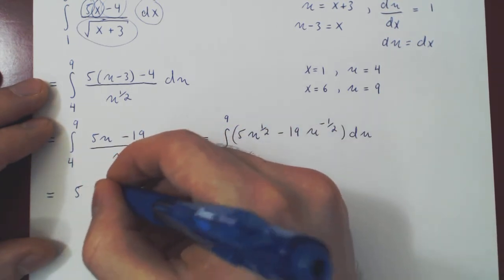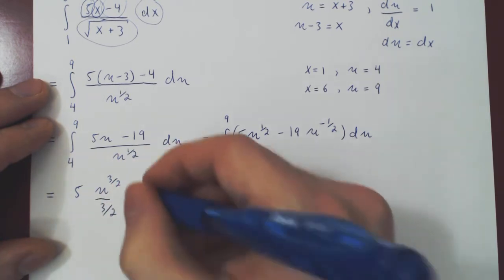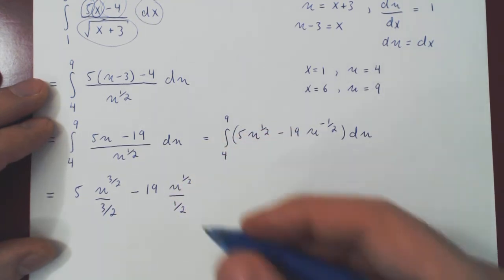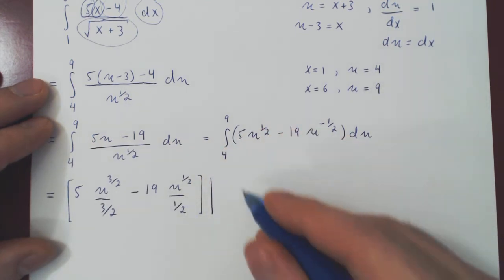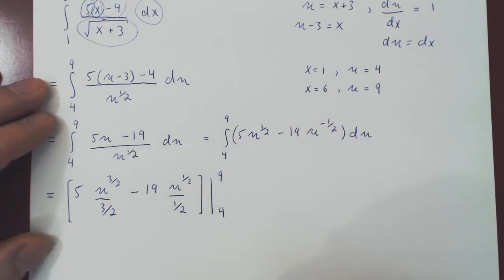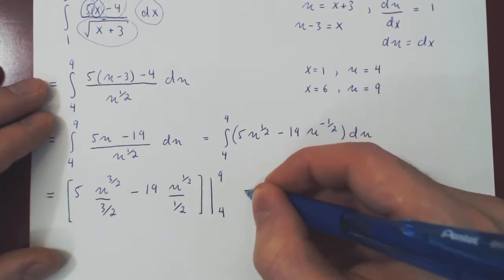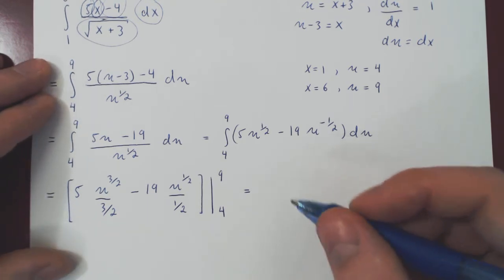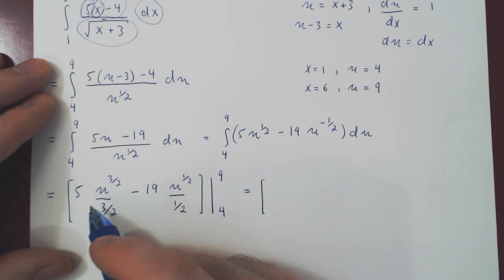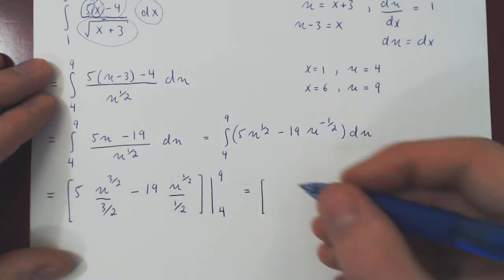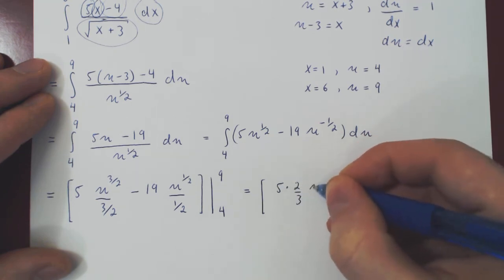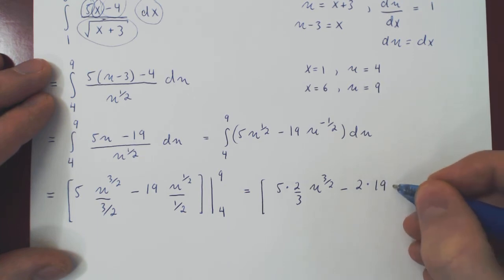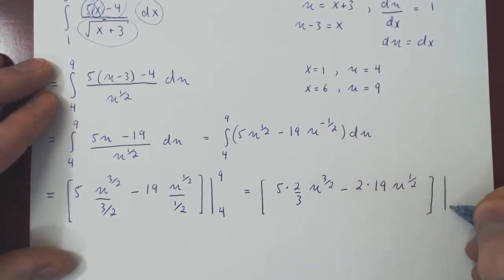u over u to the 1 half is u to the 1 half, minus 19, 1 over u to the 1 half is u to the negative 1 half, and now we can simply use the power rule on each term. 5, 1 half plus 1 is 3 half, divide by 3 half, minus 19, constant multiple, negative 1 half plus 1 is 1 half, over 1 half. And we must evaluate our anti-derivative from u equals 4 to u equals 9. Well, let's simplify this a little bit. And here, because we have square roots, and both 9 and 4 are perfect squares, we will simplify. So if you divide by 3 half, you multiply by 2 thirds. So you'll have 5 times 2 thirds, u to the 3 half, minus, divide by 1 half, multiply by 2, 2 times 19, u to the 1 half, from as before, 4 to 9.